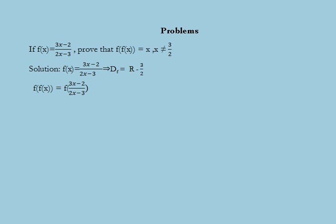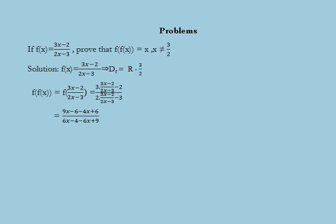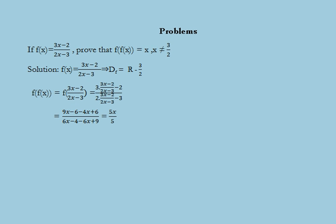Substituting, f(f(x)) = [3·(3x-2)/(2x-3) - 2] / [2·(3x-2)/(2x-3) - 3] = (9x - 6 - 4x + 6) / (6x - 4 - 6x + 9) = 5x / 5 = x. Thus we have proved that f(f(x)) = x for f(x) = (3x - 2)/(2x - 3), as required.